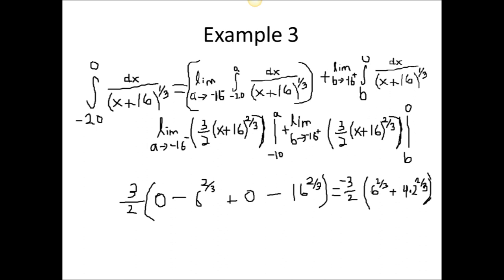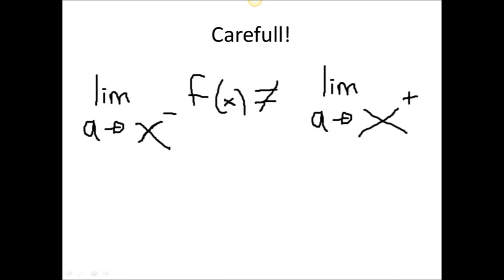We then add the two terms and multiply the quantity of the sum by 3 halves to give us our answer of minus 3 halves times the quantity 6 to the 2 thirds power plus 4 times 2 to the 2 thirds power.